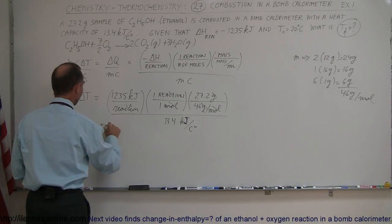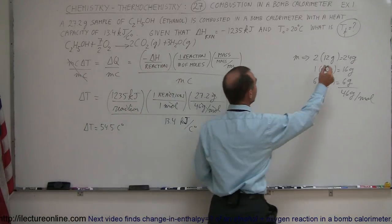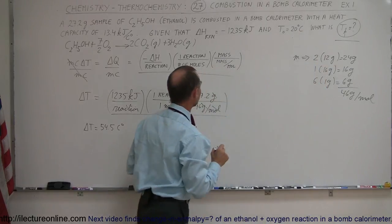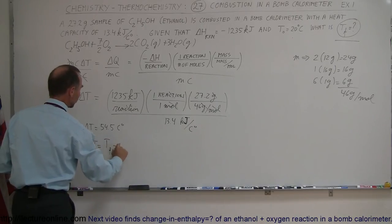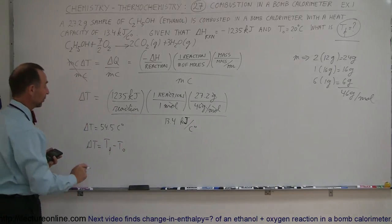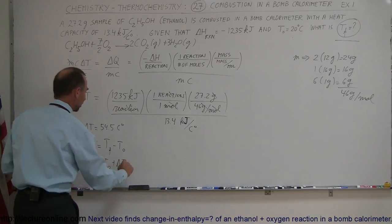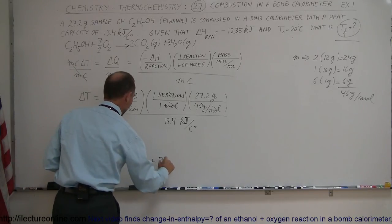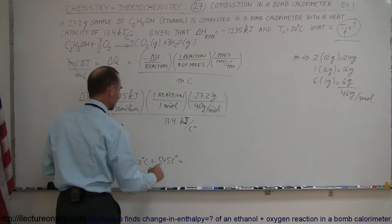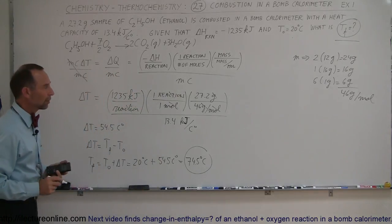They're asking for the final temperature. They gave us the initial temperature. Delta T equals temperature final minus temperature initial, so temperature final equals temperature initial plus the change in temperature. In this case, it would be 20 degrees Celsius plus 54.5 Celsius degrees, and together that gives you 74.5 degrees Celsius as the final temperature of the calorimeter.